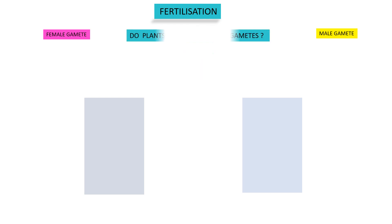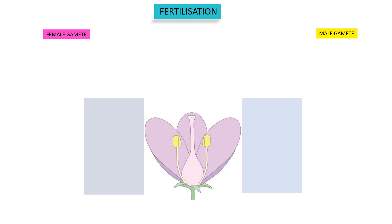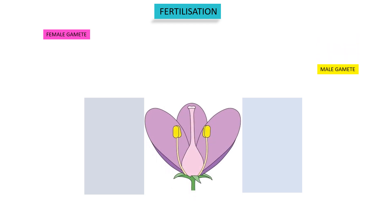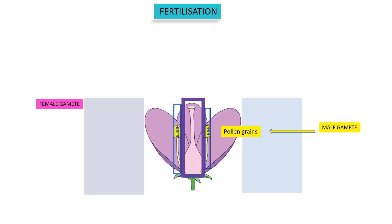Do plants have male and female gametes? Yes, they are present in the flower. The male gametes are contained inside the pollen grain. Remember, pollen grain itself is not a male gamete. The pollen grains are produced inside the anther of the male part. The female gametes are found in the embryo sac which is surrounded by the ovule.